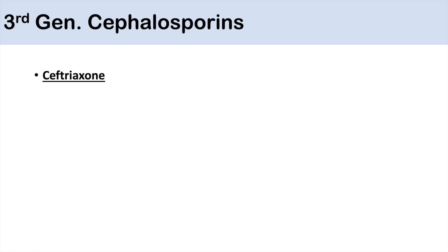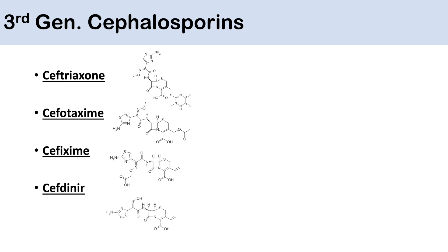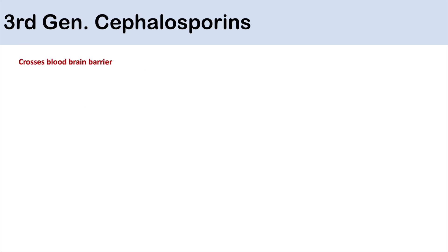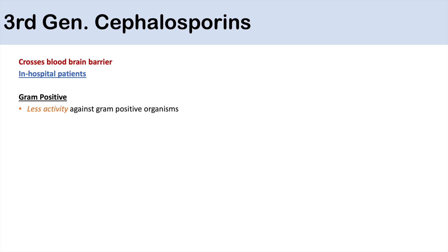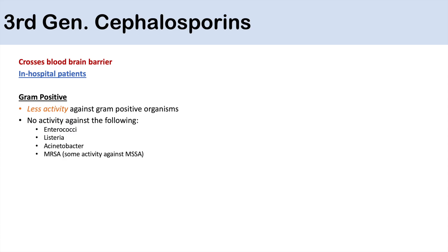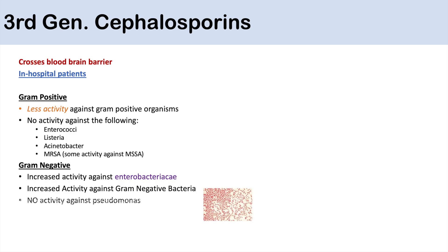Third-generation cephalosporins include ceftriaxone, cefotaxime, cefixime, cefdinir, and ceftazidime — a larger group. They have the ability to cross the blood-brain barrier, unlike previous generations, and are generally used for in-hospital patients, mostly given parenterally by IV. Gram-positive coverage is generally less than previous generations. They have no activity against enterococci, Listeria, Acinetobacter, or MRSA, but some activity against MSSA. They have increased activity against Enterobacteriaceae and gram-negative bacteria in general, but no activity against Pseudomonas — with one exception: ceftazidime does treat pseudomonal infections.